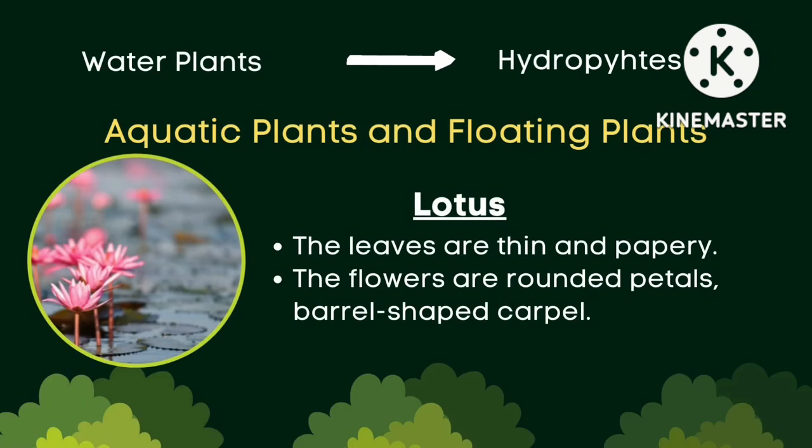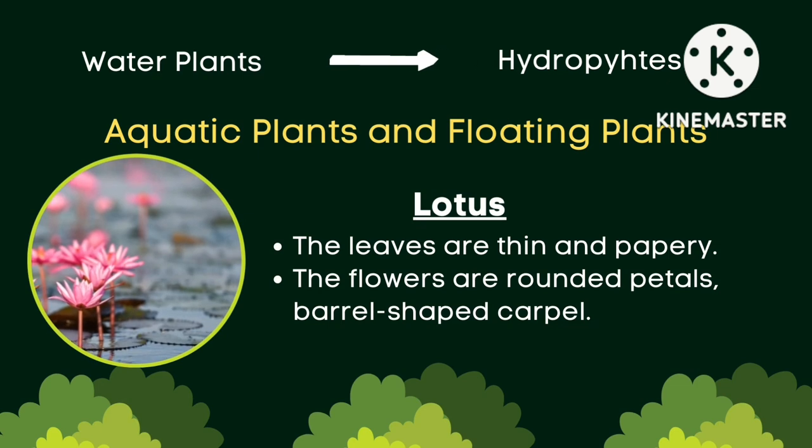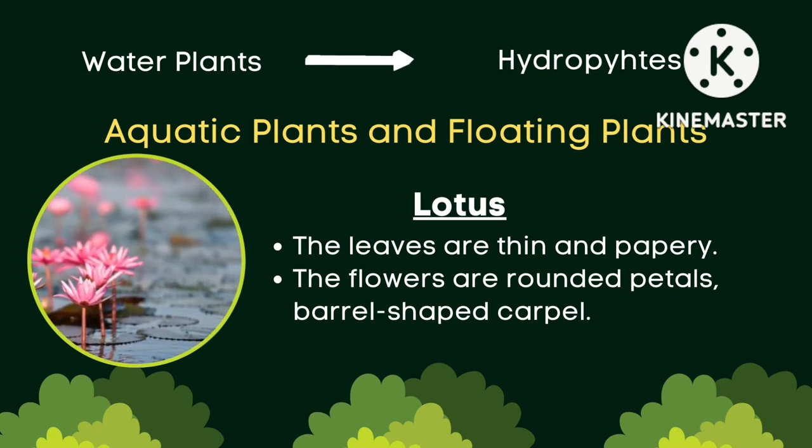The leaves of lotus are thin and papery. The flowers have rounded petals and a spiral-shaped carpel.